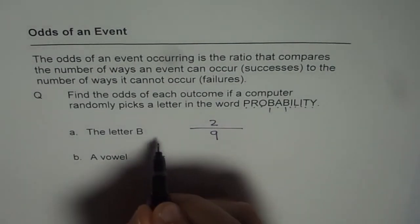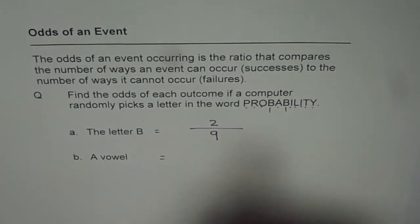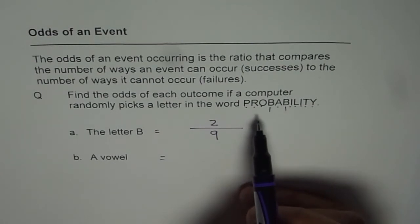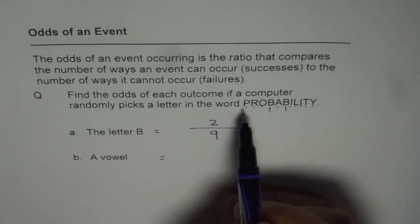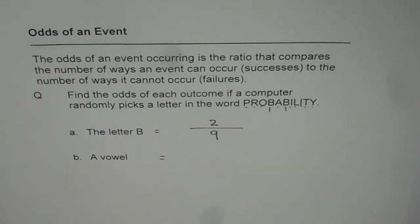Part B is a vowel. Now vowels are A, E, I, O, U. So let's pick up those. So 1. So let's color them and pick them up.